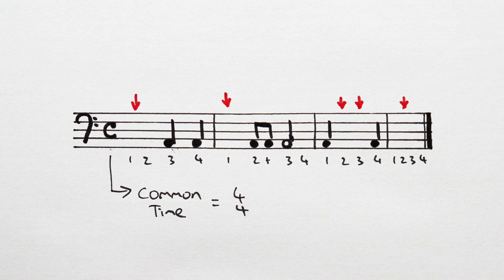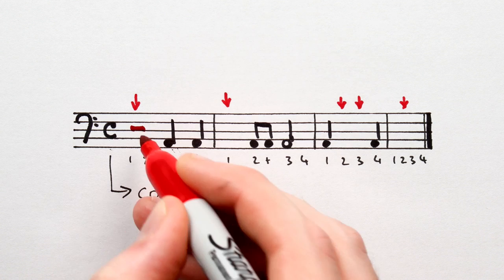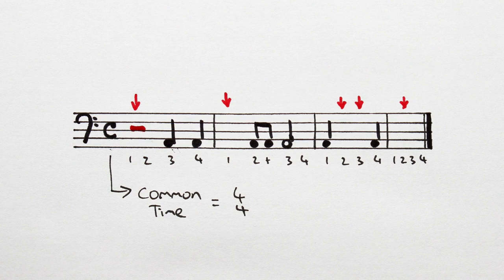In bar 1, beats 1 and 2 are missing. Now, we totally could use two crotchet rests here, but let's keep things clean and use a minim rest instead.